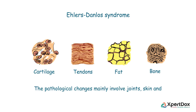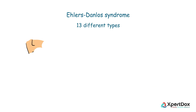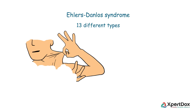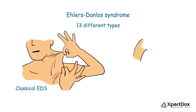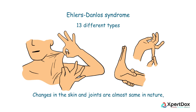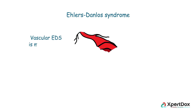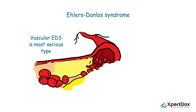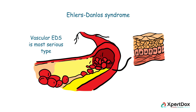The pathological changes mainly involve joints, skin, and the walls of the blood vessels. In total, there are 13 different types of Ehlers-Danlos Syndrome, the most common of which are classical EDS and hypermobility EDS. For all types of the syndrome, changes in the skin and joints are almost the same in nature, differing only in their severities.